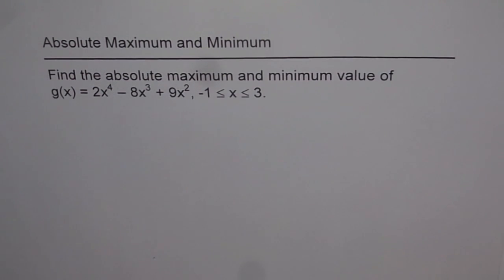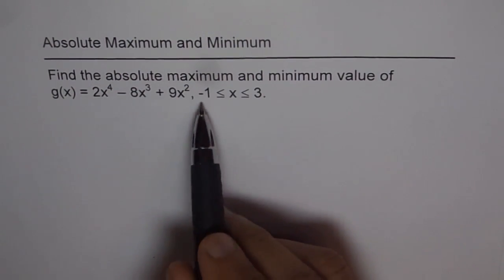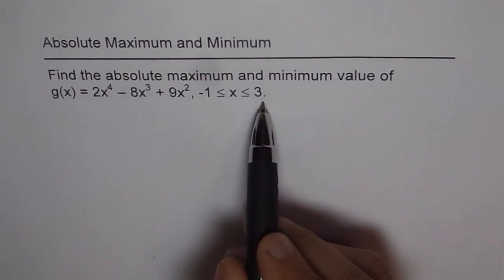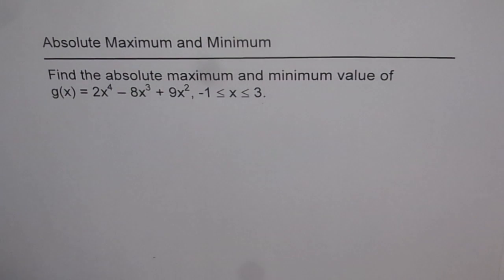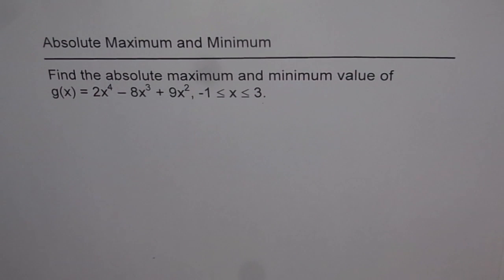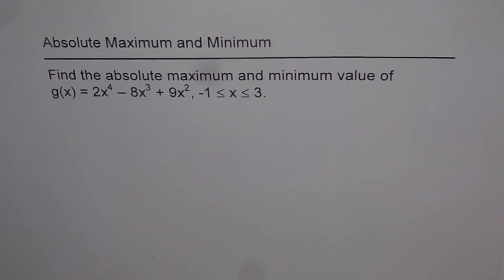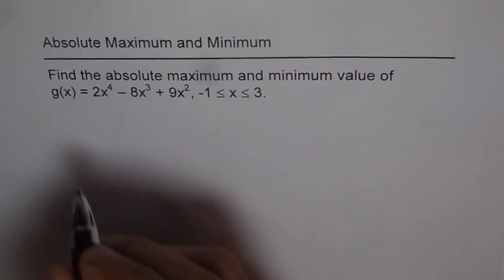That could happen at the endpoints or at the critical number, so let's first find the critical number. The critical number is a number where the derivative of the function could be 0 or undefined.